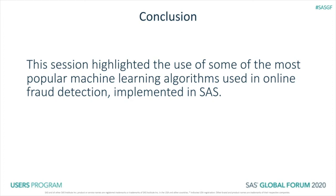In conclusion, in this session we really wanted to highlight some of the most popular machine learning algorithms — taking what would probably be a couple of weeks of a graduate-level course and condensing it into 20 minutes. Then taking those models and implementing them in SAS. Using typical classification criteria, in this specific case the decision tree gave us the best performance relative to the area under the curve, the lowest false discovery rate, and also the lowest misclassification rate.